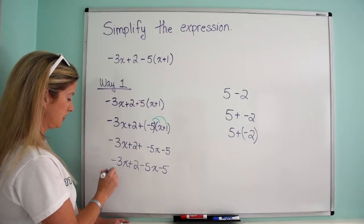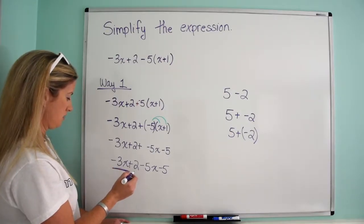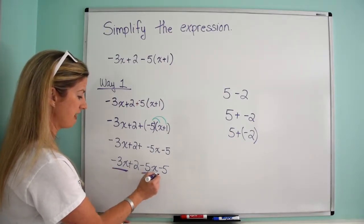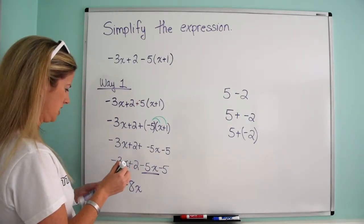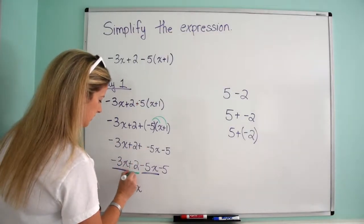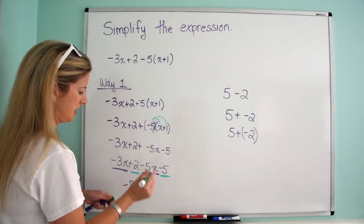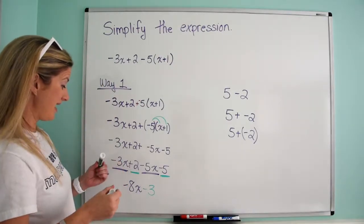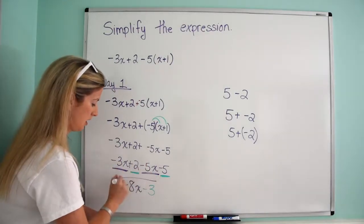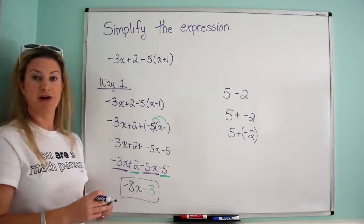All right, now we just combine like terms. So I've got a negative 3x and a negative 5x, so that's going to be a negative 8x. And then I've got a positive 2 and a negative 5, so that's going to be negative 3. Awesome. So then my answer is just negative 8x minus 3.